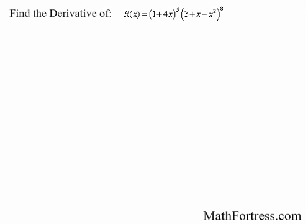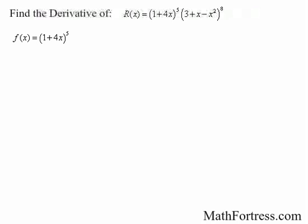Find the derivative of the quantity 1 plus 4x to the power of 5 times the quantity 3 plus x minus x squared raised to the power of 8. We see that we actually have a product of two functions: the quantity 1 plus 4x to the power of 5, and the quantity 3 plus x minus x squared raised to the power of 8. So we actually need to use the product rule.